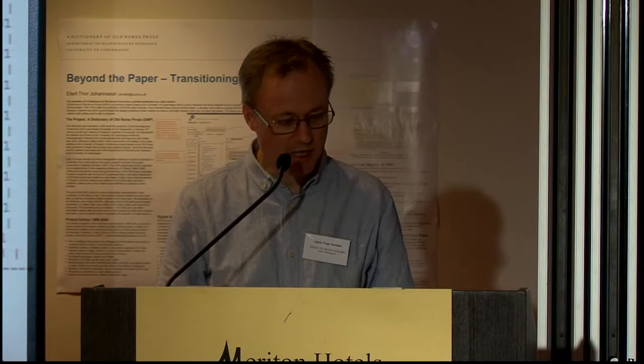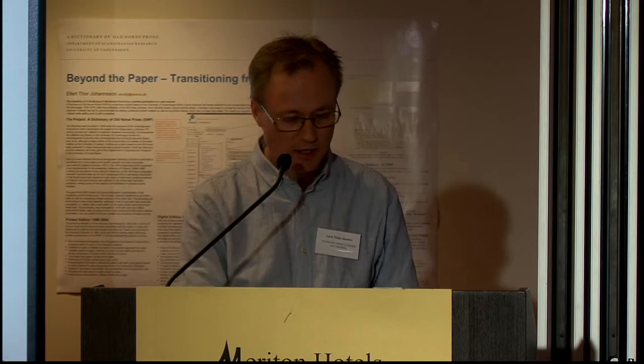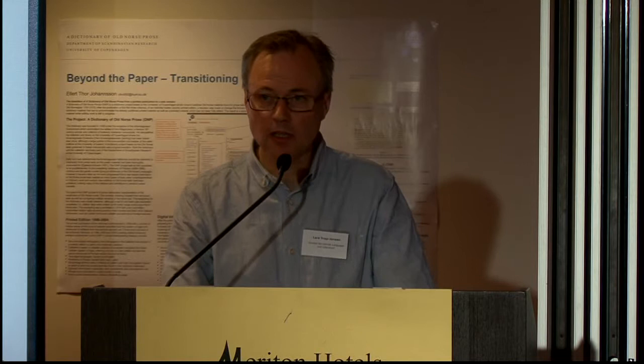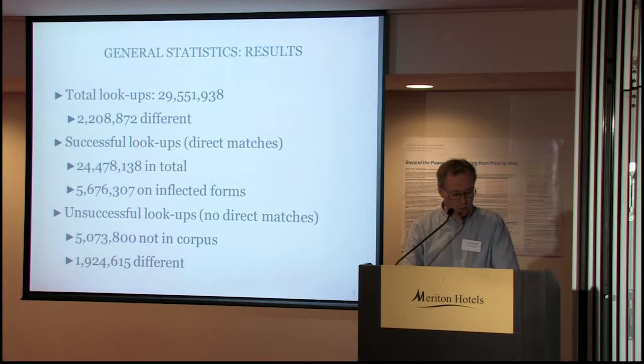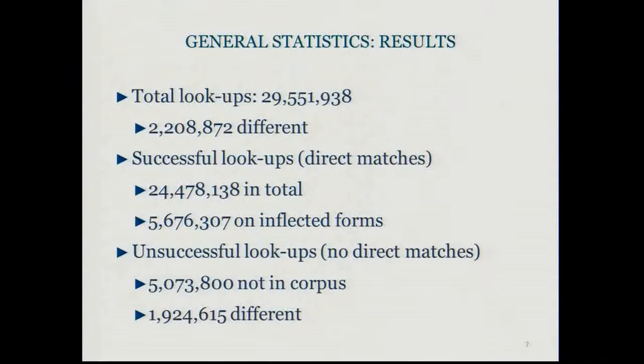Let's get to the results themselves. First, some overall numbers. In total, we're left with about 30 million lookups in the three-year period and some 2.2 million different ones. Out of the 30 million, about 25 million were successful — that is, there is a direct match. So it follows that the remaining 5 million were unsuccessful. There were about 2 million different lookups that didn't match an entry. Just over 20% of the lookups were not in the lemma form but were in inflected forms.